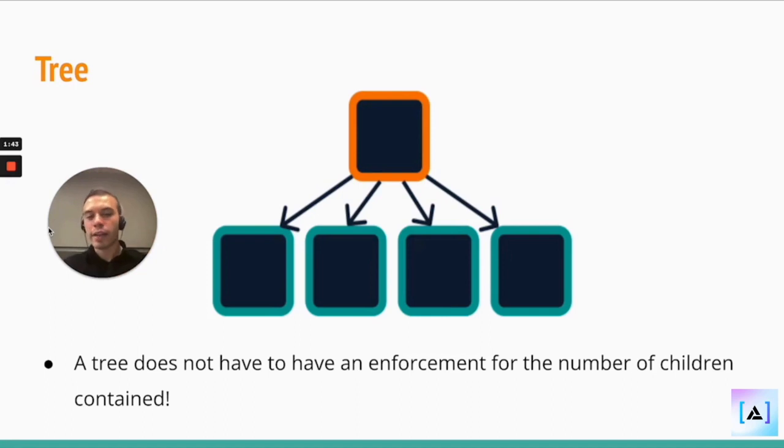A tree does not have to have an enforcement for the number of children contained. A tree can just be a tree. It can just be something visually resembling a tree. It can just be a thing with a bunch of branches. We're going to be focusing mainly on rule-enforcing trees. But a tree can just be a tree.